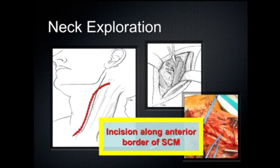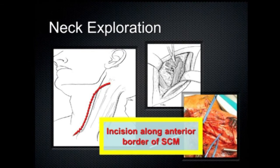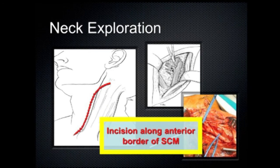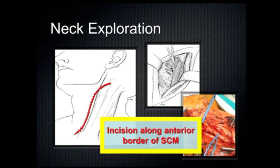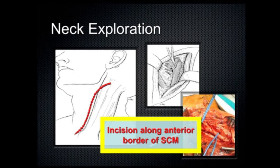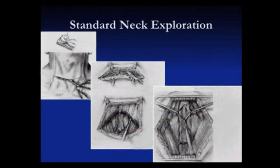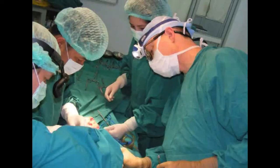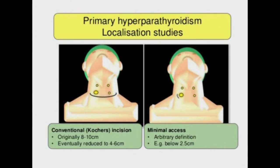Standard neck exploration involves a larger incision that allows the surgeon to access and examine all four parathyroid glands and remove the overactive ones. This type of surgery is more extensive and typically requires a hospital stay of one or two days. Surgeons use this approach if they plan to inspect more than one gland. General anesthesia is used for this type of surgery.